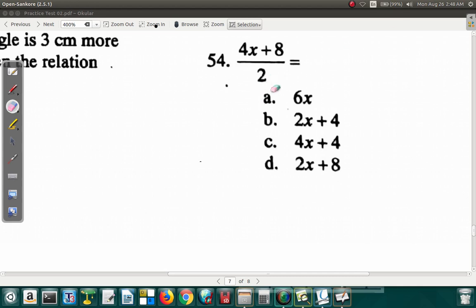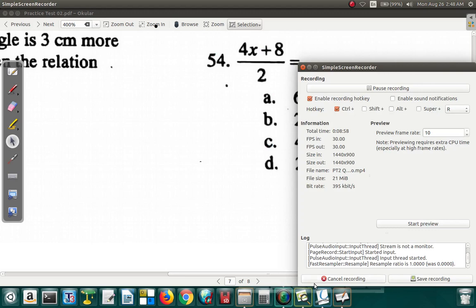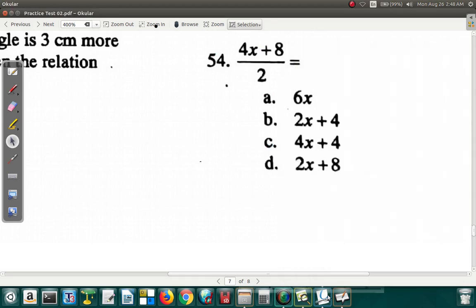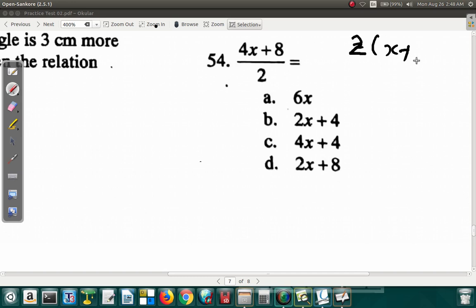You have 4x plus 8. 4x plus 8 over 2 is equal to? Let's see. 4x plus 8, what is it equal to? Over 2, what is it equal to? If you should factorize it up, you'll have 2 outside the bracket and x plus, let me write the 2 properly, 2 outside the bracket, x plus 4 inside the bracket. All over 2, so 2 would cancel 2. Alright?